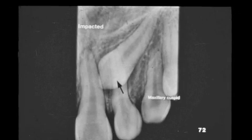The permanent maxillary canines are commonly, or not unusually, impacted or ectopically erupting. The primary canine is present — letter H. Notice the attrition on the incisal edge, the large bulkiness on the cervical of the crown, and the shorter root.